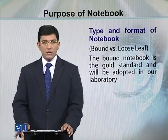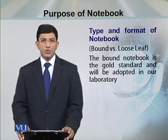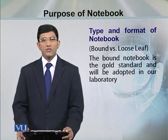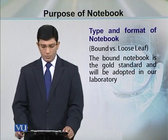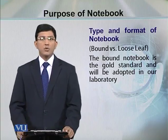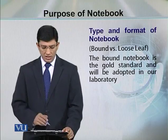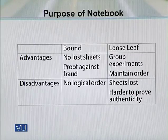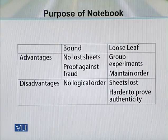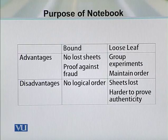What format of a notebook should one use? Normally, we deal with two types of notebooks. One is in the loose sheet form, which is ring binding, and the second one is in the permanent bound form. The permanent bound form is the gold standard notebook to maintain records. The advantages of the bound notebook are that you have no fear of losing the sheets and it provides proof against frauds, whereas the disadvantage is that you cannot group together similar kinds of experiments.